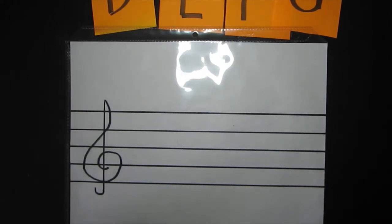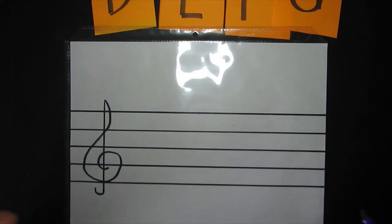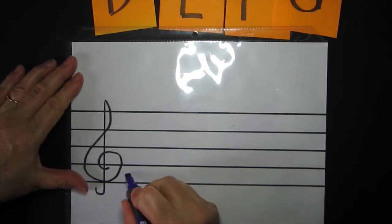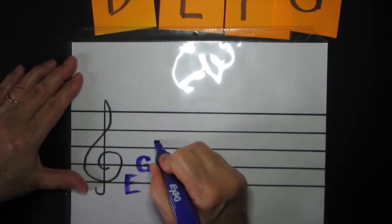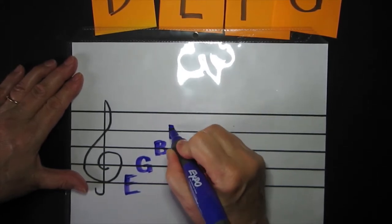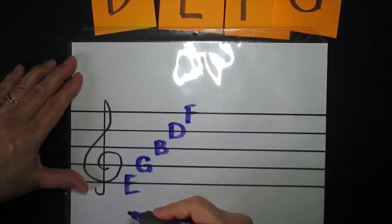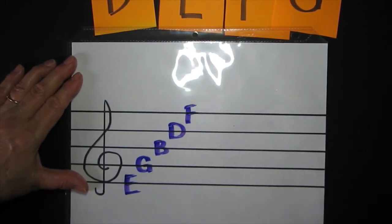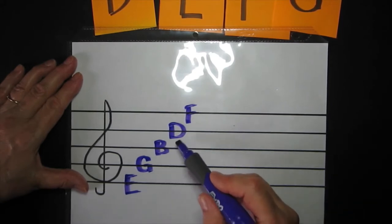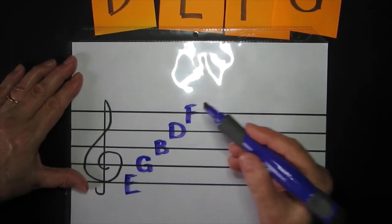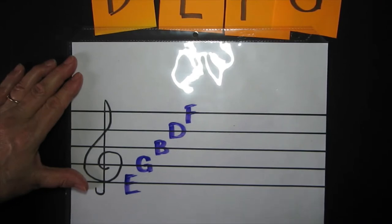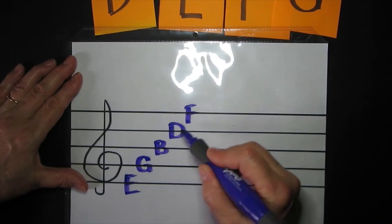Now we're going to practice how to identify these different pitches. Now there's a saying that goes with the lines: E, G, B, D, F. Now that doesn't make a word. So we made up a saying using the first letter of each line name in the same. Every good bunny deserves fun. You can make up your own saying, but that's the one I like to use. Okay, those are the names of the lines.